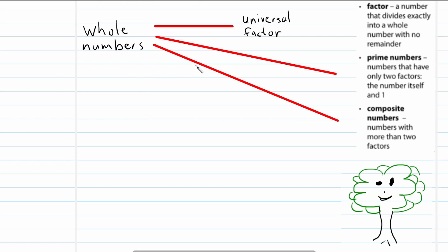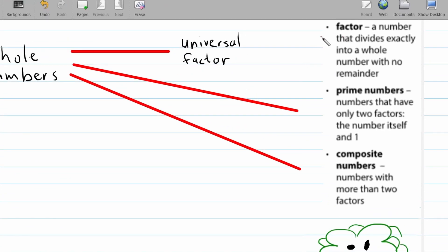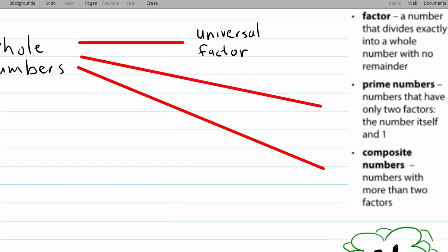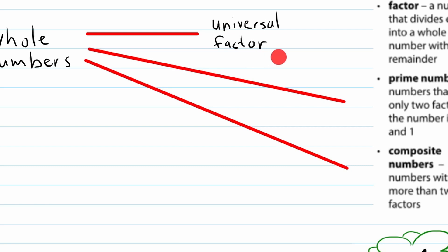We are still on the topic of whole numbers, and I want to divide whole numbers into the following three categories. But first of all, let's look at what a factor is. A factor is a number that divides exactly into a whole number with no remainder — you'll remember the remainder from long division.